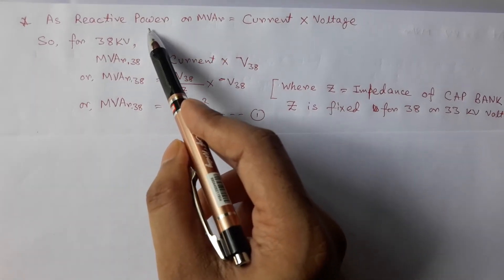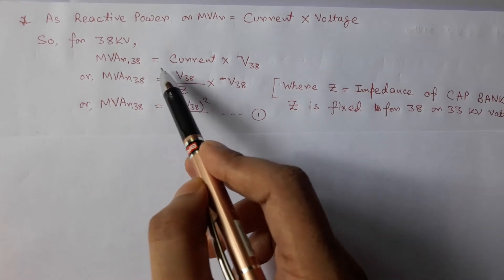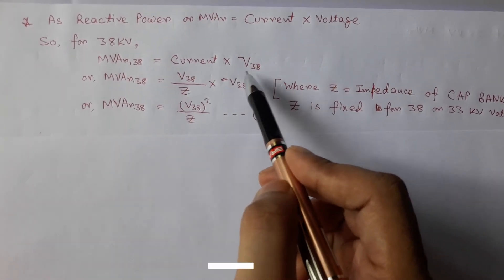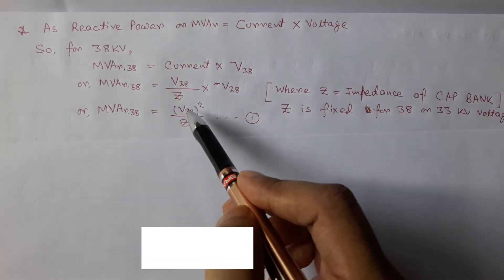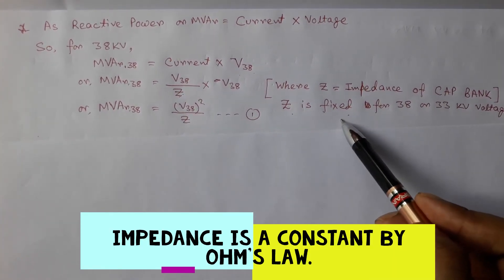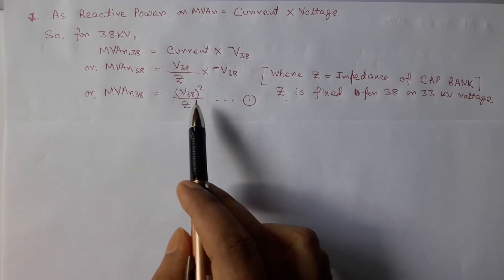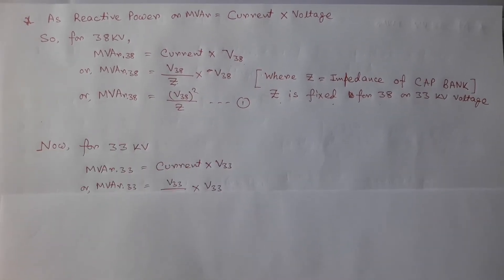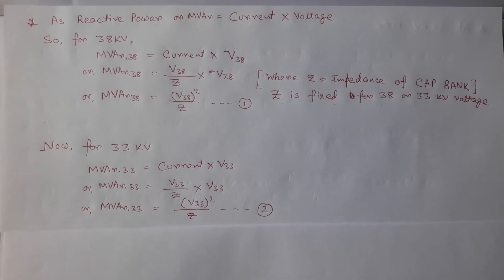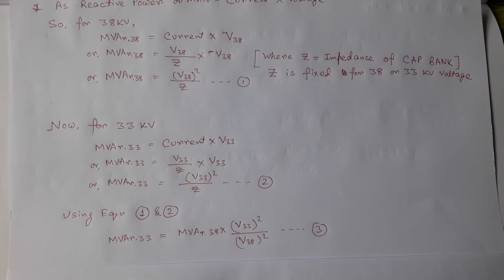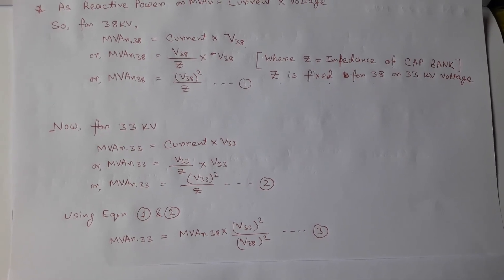We know that reactive power is the multiplication of current and voltage. For 38 kV, we replace the current term with voltage divided by impedance. The impedance of a capacitor bank is fixed — it does not change with system voltage. So for 38 kV we can write equation 1, and since our capacitor bank will be connected at 33 kV, we write equation 2. Using equations 1 and 2 together gives us equation 3 to find the mVar rating at 33 kV from the 38 kV nameplate data.